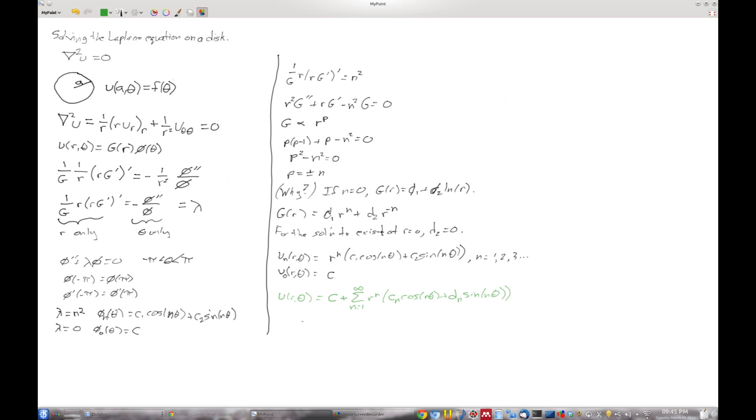Okay, and now if I want to satisfy the boundary conditions, I would let r equal a. So u of r, a is supposed to be equal to f of theta.